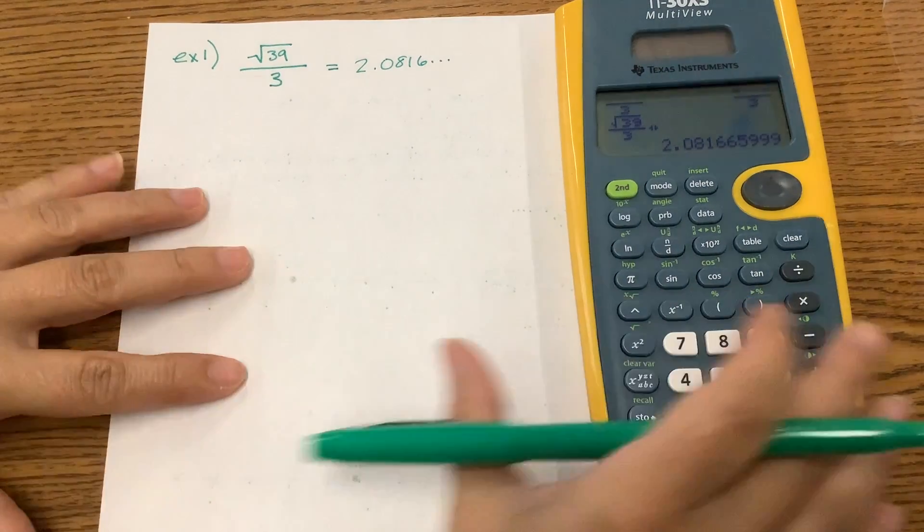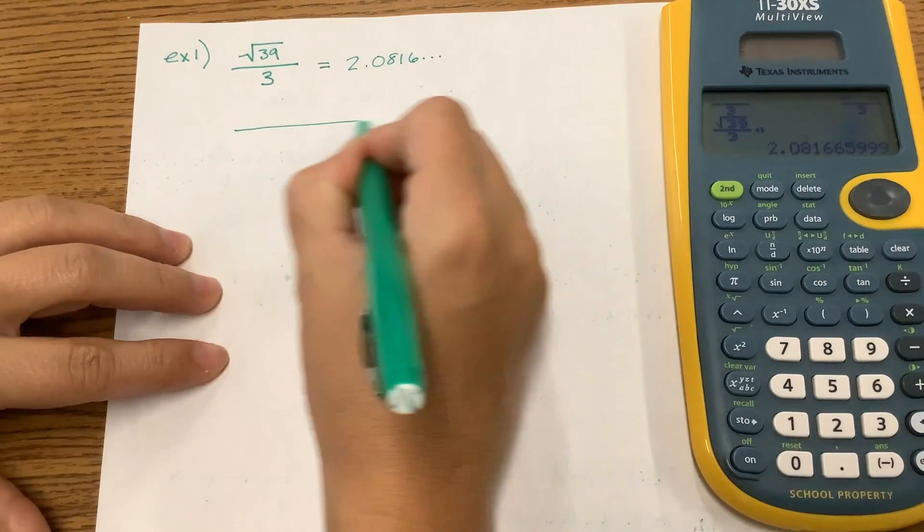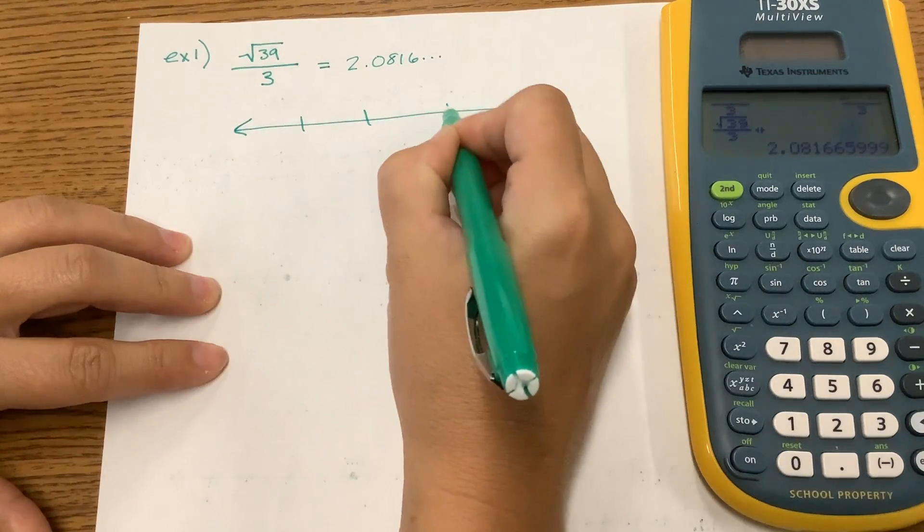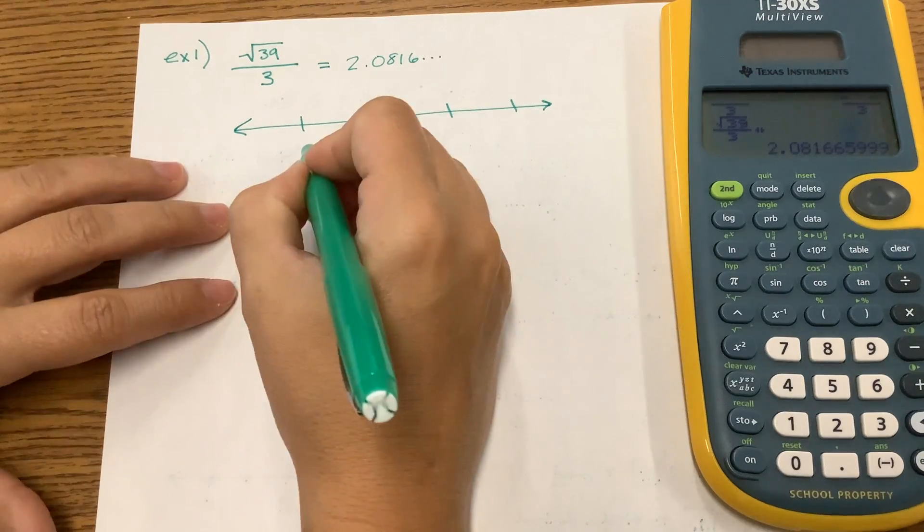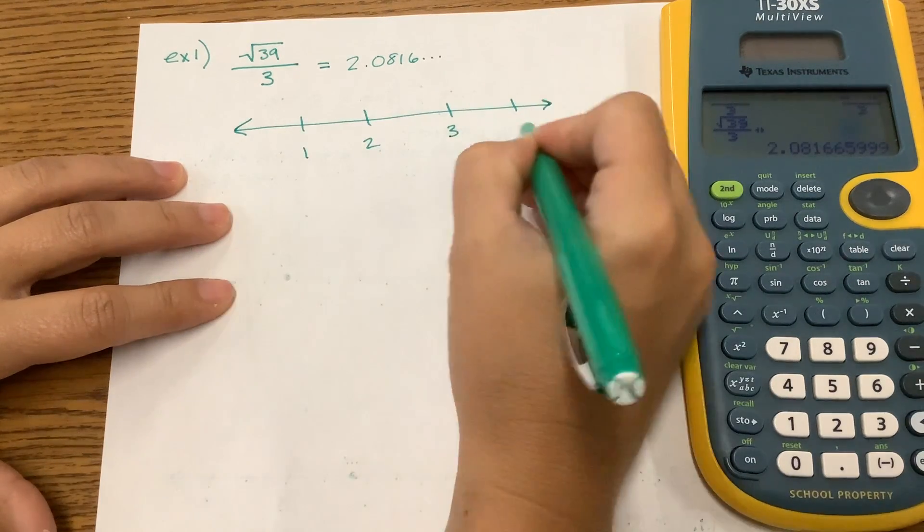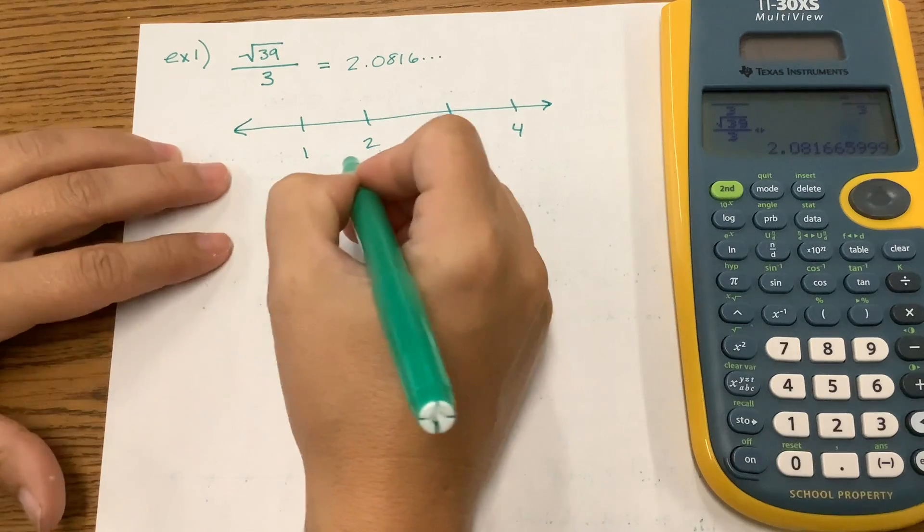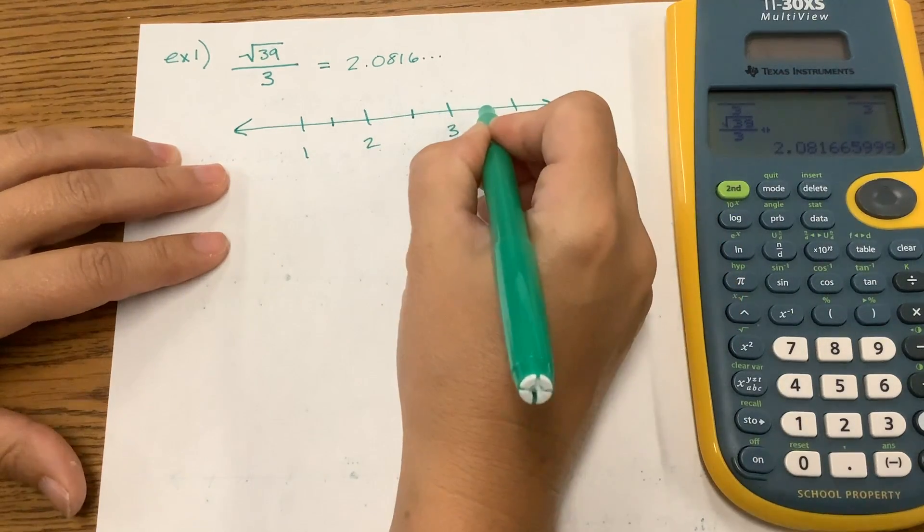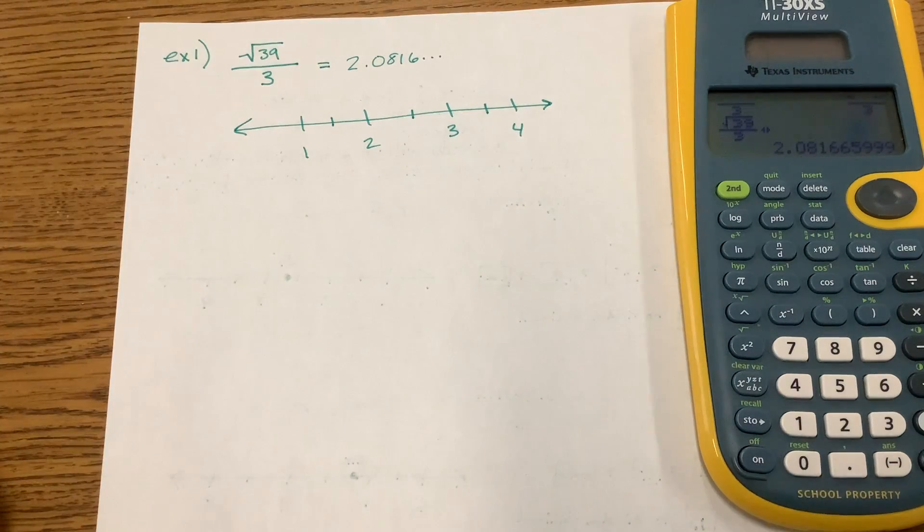All right, let's draw ourselves a number line for this. So I numbered it 1, 2, 3, 4, and I'm going to put a halfway mark in between each one of those whole numbers. So I know that that's like 1.5, 2.5, and so on.